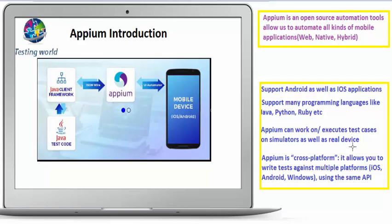The simulator is not the actual device; it is software behaving as a mobile device. This is important because when automating an application it is not possible to execute test cases on all devices, since there are hundreds of devices in the market. Normally we choose only four or five real devices and generate simulators for the remaining devices, giving us coverage across all hundred devices.